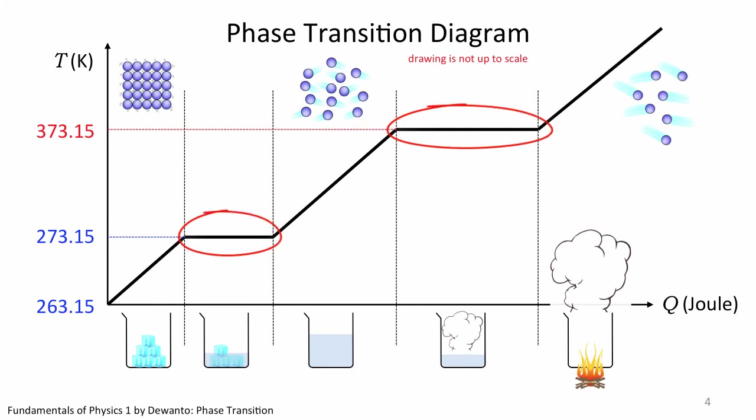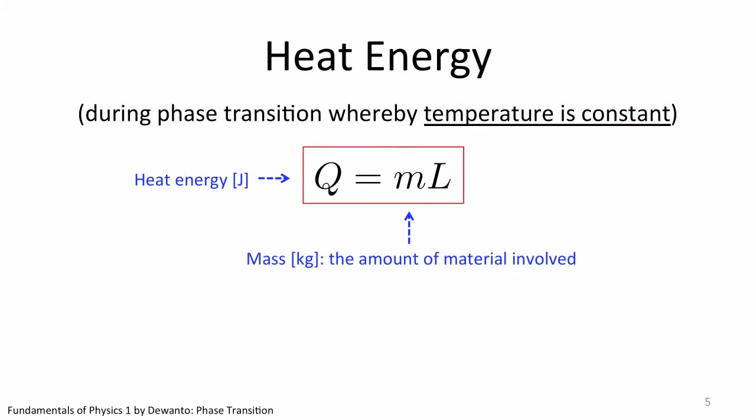The other portions of the diagram involve no change in temperature. This portion has to be governed by different equation: Q equal to M times L. Q and M carry the same physical meaning as before. Because these portions involve no change of temperature, there is no more delta T in the equation. Meanwhile, L which is called latent heat carries the same physical meaning as heat capacity in the previous equation. If heat capacity refers to how easy or difficult it is for a material to heat up under certain amount of heat, latent heat refers to how easy or difficult it is for a material to change its phase under certain amount of heat. It is a quantity characteristic of the material.